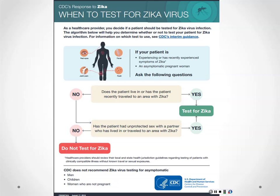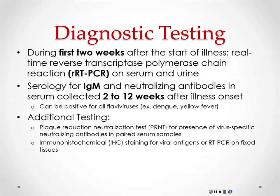For partners of pregnant women who've traveled, if they don't have symptoms, we're recommending no sex for six months rather than testing them. In the first two weeks of illness, a PCR test on serum and urine is done. After two weeks, IgM is done first, followed by neutralizing antibodies — we don't consider it positive until neutralizing antibodies come back positive. If the IgM is positive, we send for neutralizing antibodies because IgM serology can cross-react with dengue and chikungunya. Just call the health department and we'll walk you through current recommendations.